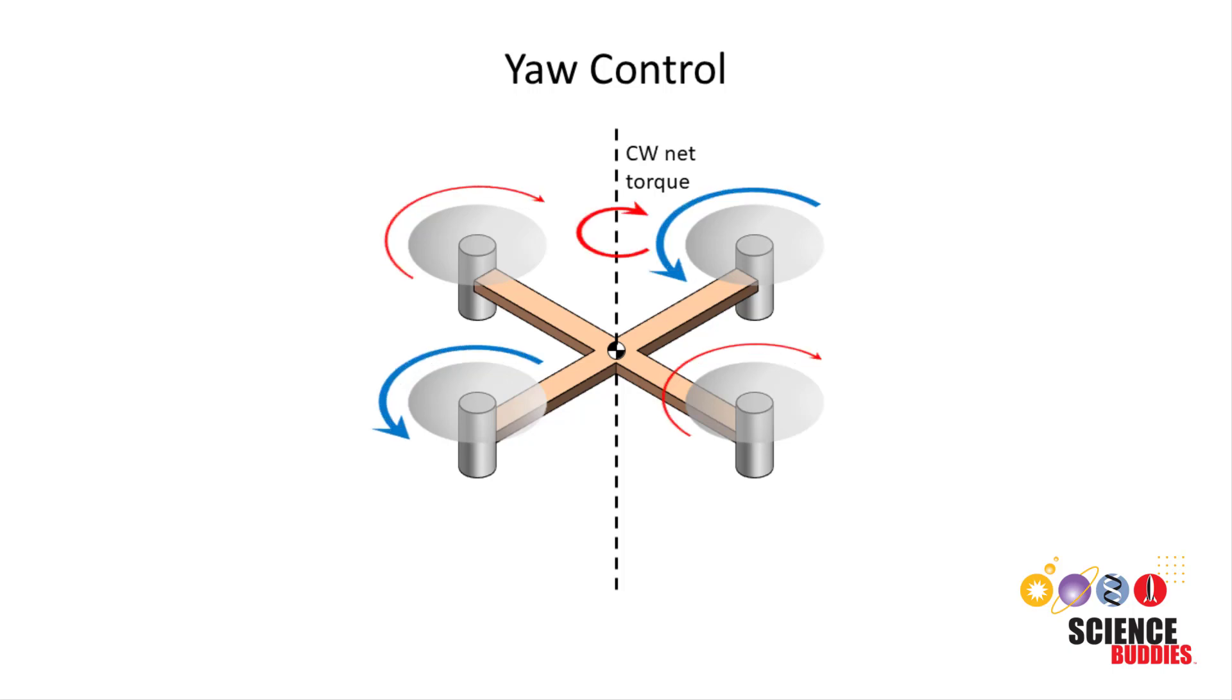However, for example, if the counterclockwise motors speed up while the clockwise motors slow down, then due to conservation of angular momentum, this will cause the entire drone to rotate in the clockwise direction.